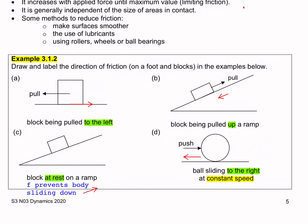Example b: A block is being pulled up a ramp, so the block is moving upwards relative to the ramp. The frictional force will act to oppose this upward movement, acting downwards at the surface between the block and the ramp. If this frictional force is equal to the pull, the block will move at constant speed.